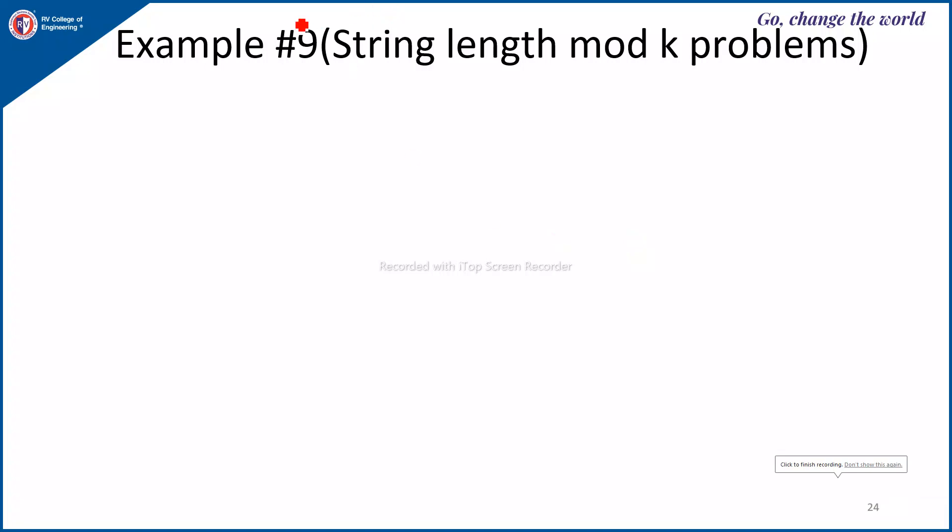Next variety of DFA design problem: string length modulo k problems. So first problem, design a DFA for L equals W such that length of W mod 3 is equal to 0, where W belongs to 0, 1.